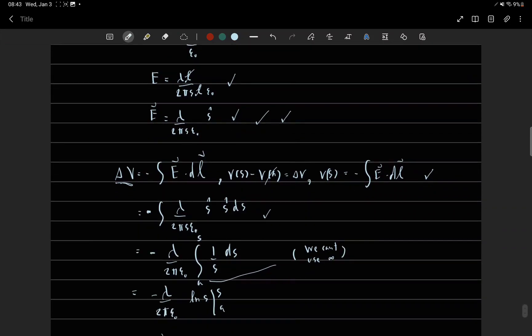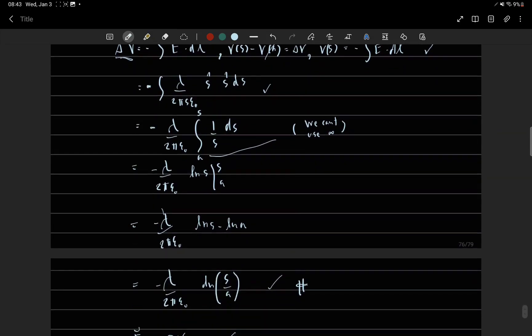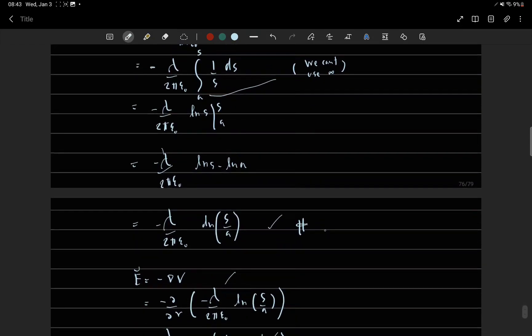And to find potential we use V equals minus integral E·dL, and the answer is here: minus lambda over 2π epsilon zero times ln(s/a).